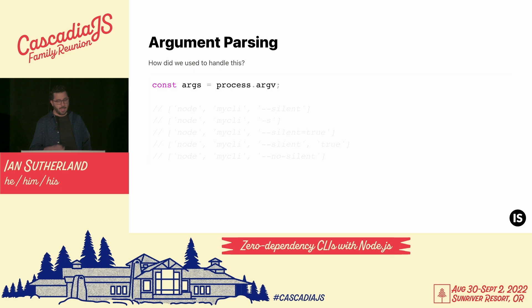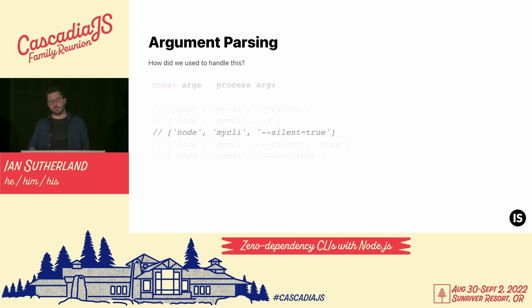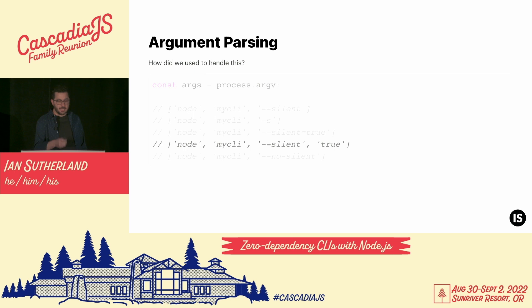How do we handle this in Node? Node gives us something called process.argv, which is an array of what was typed on the command line, split anywhere there's blank space. The first element in the array is always the node executable itself, then the name of your script, followed by all the arguments. With double dash silent we get that as expected. With dash s we get dash s. With silent equals true and no spaces, we get the key and value in one array element. But if we used a space, the key and value are in two different elements. The last one gives us no-silent as a single argument.